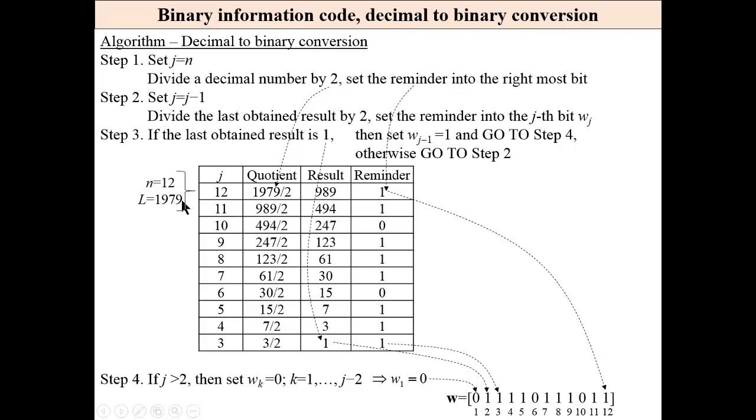For example, 1979 divided by 2 gives 989. The remainder is 1, and this is the last bit of the code word. Then set j equal j minus 1 and divide the last obtained result by 2. Set the remainder into the jth bit wj.